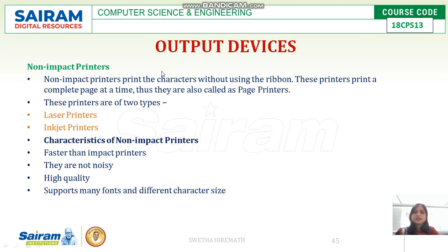The last type of output device to discuss is non-impact printers. Non-impact printers do not use a ribbon between the character and the paper.